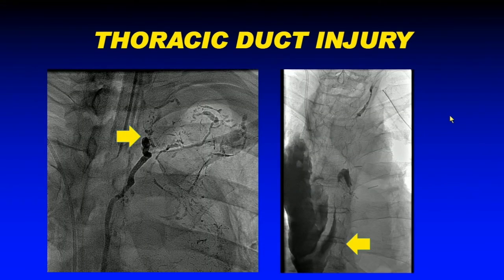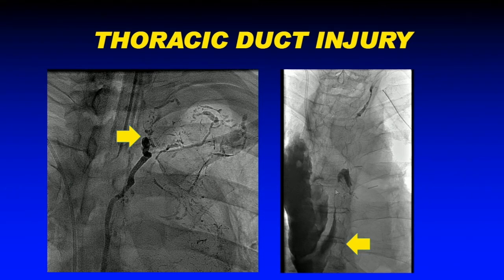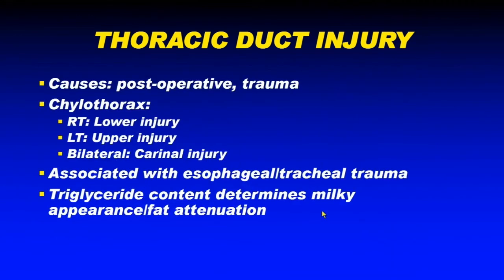The last case involves a patient who had a mediastinal biopsy and came with recurrent chylous effusions. Lymphangiogram nicely demonstrated the thoracic duct with large amorphous extravasation of contrast into the pleural space and mediastinum. A different patient who had esophagectomy for esophageal cancer showed a large contrast outpouring between the mediastinum and the thoracic duct — a thoracic duct injury diagnosis was made. These are commonly due to postoperative or traumatic causes; pleural effusions may be unilateral or bilateral, and triglyceride content typically determines the milky appearance or attenuation on CT.